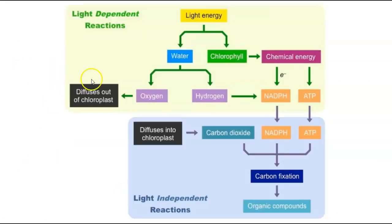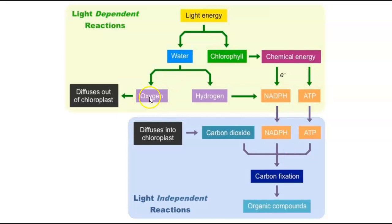In the light-dependent reactions, it all depends on having light energy available, which goes into the chlorophyll creating chemical energy. Water gets broken down into its oxygen and hydrogen. The hydrogen continues on with the products of chemical energy into the light-independent reaction, and oxygen is diffused out as a waste product. In the light-independent reaction, carbon dioxide diffuses in to be used with the products of the light-dependent reactions to go through carbon fixation to create organic compounds.